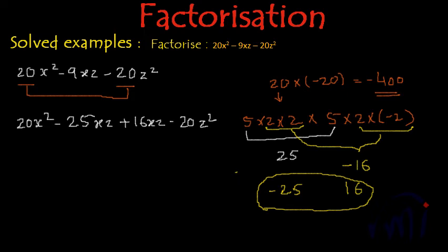And now what we do? We will group them into 2 factors each. And from these 2 factors we can take 5x common and inside the bracket we will have 4x minus 5z.